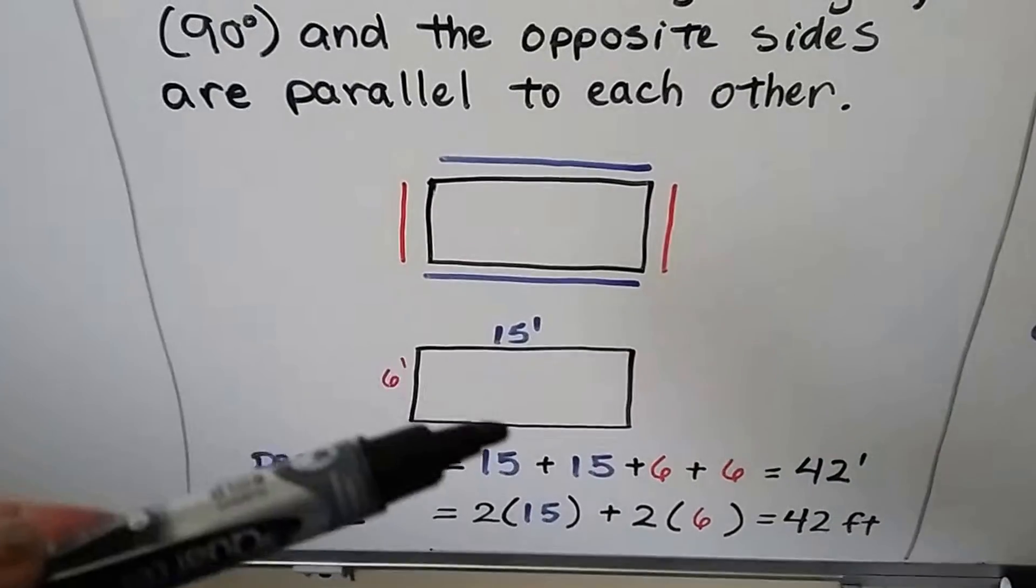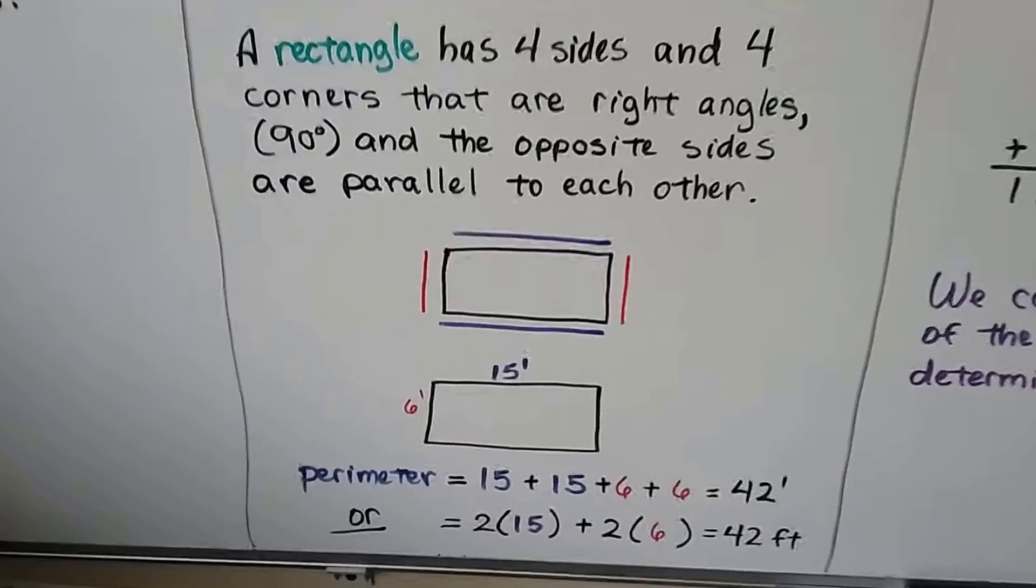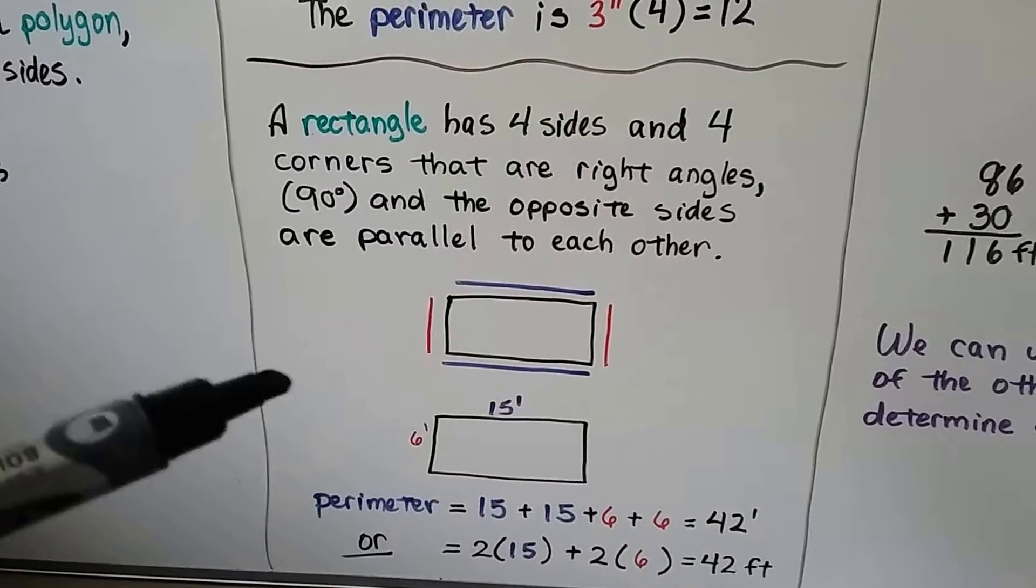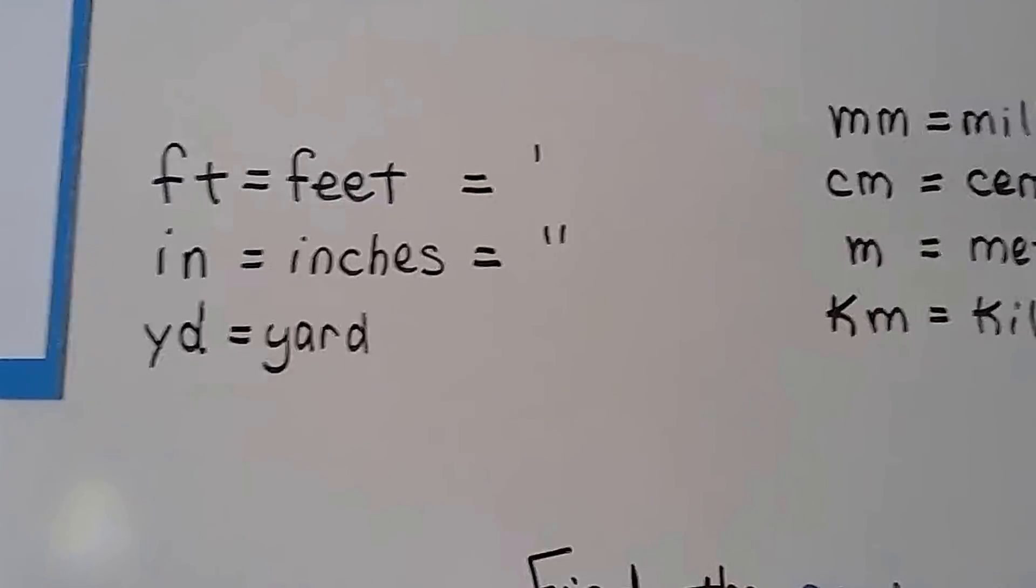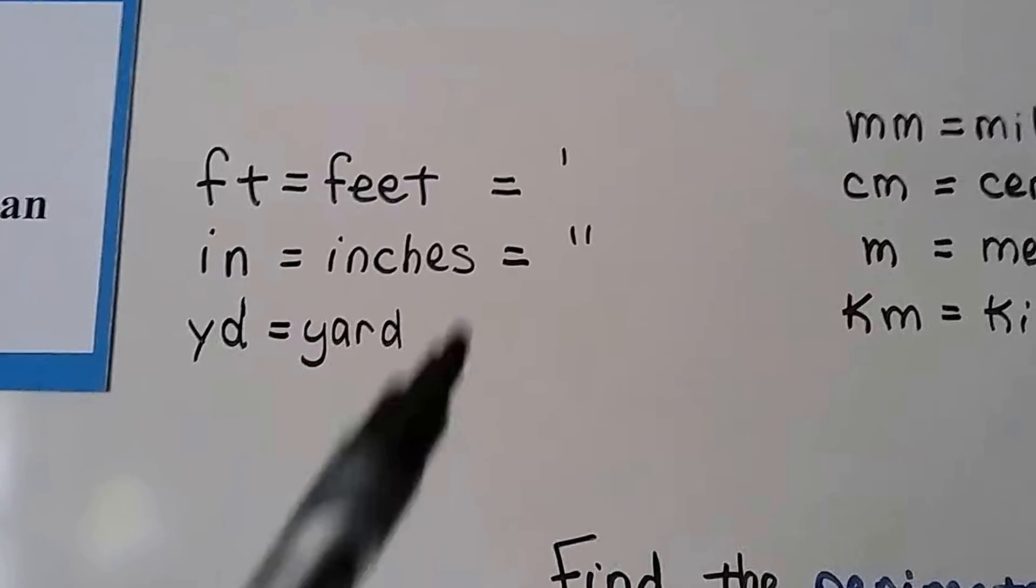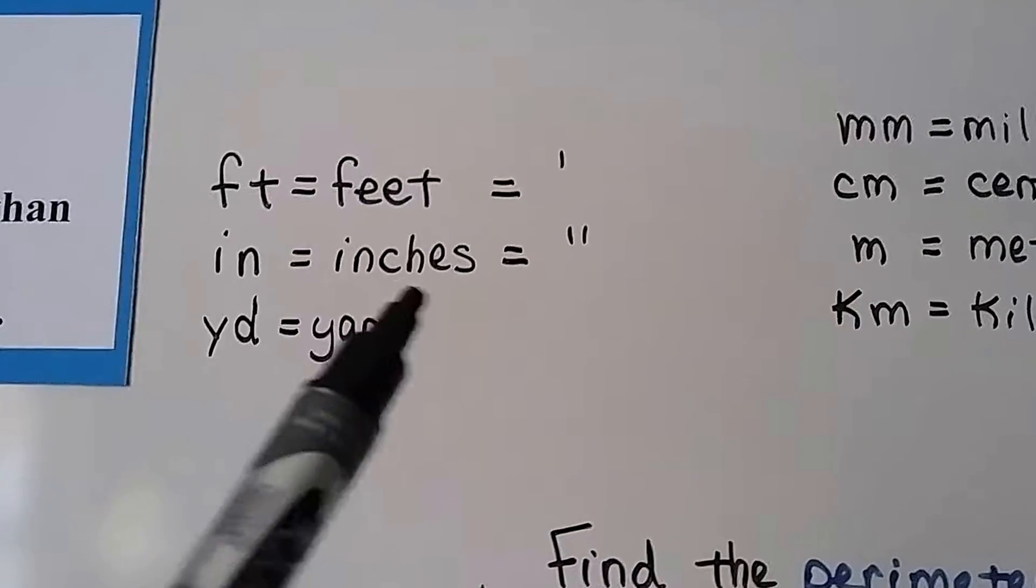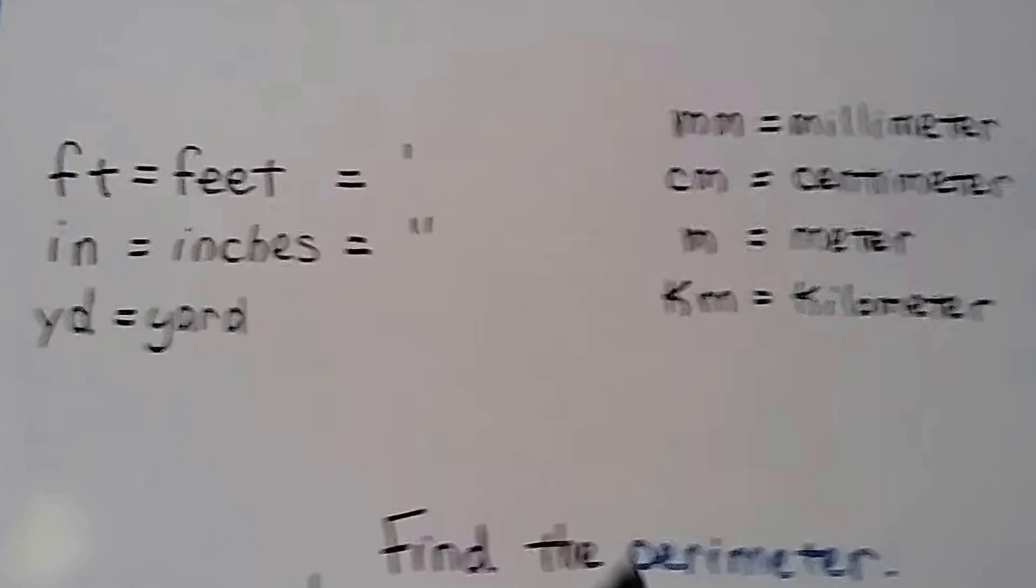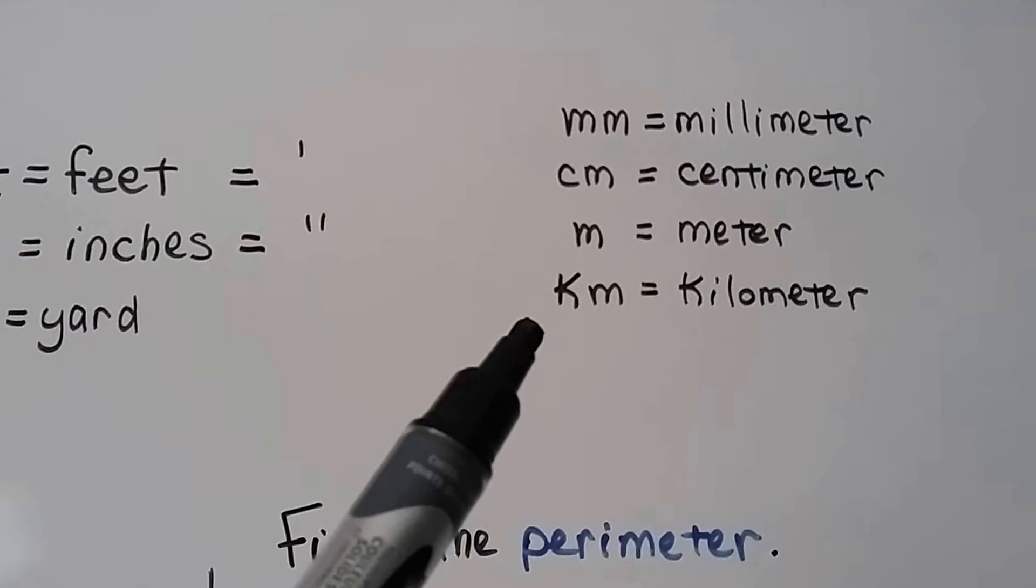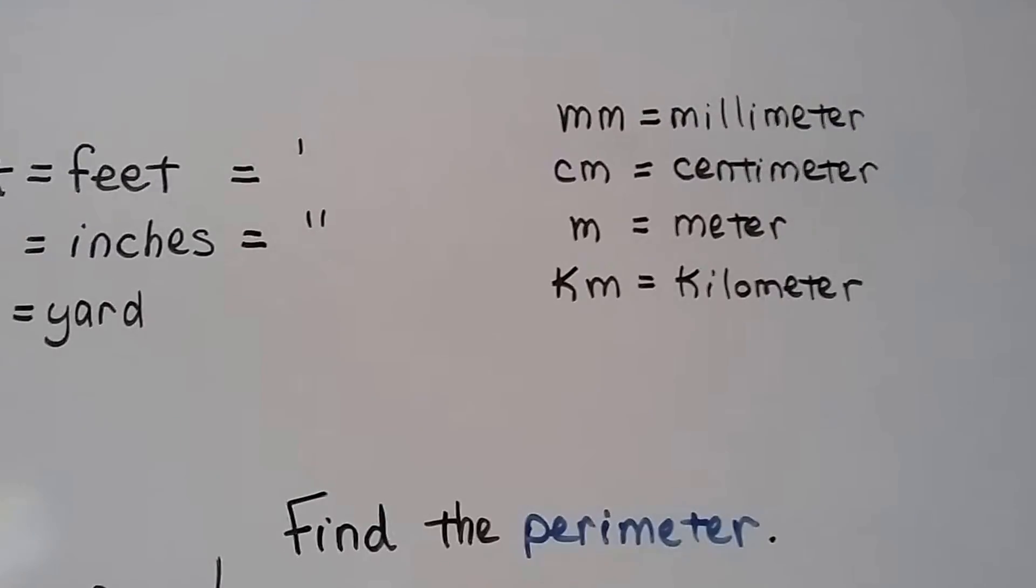Especially for regular polygons that have the same length of sides. An irregular polygon would have different side measures. Regular polygons have measures that are the same. So I want you to remember that FT is the abbreviation for feet. You can also use that little apostrophe and IN is the abbreviation for inches and we can use two of them, like little quotes. And YD is yard, MM would be millimeter, CM would be centimeter, M would be meter, and KM would be kilometer.